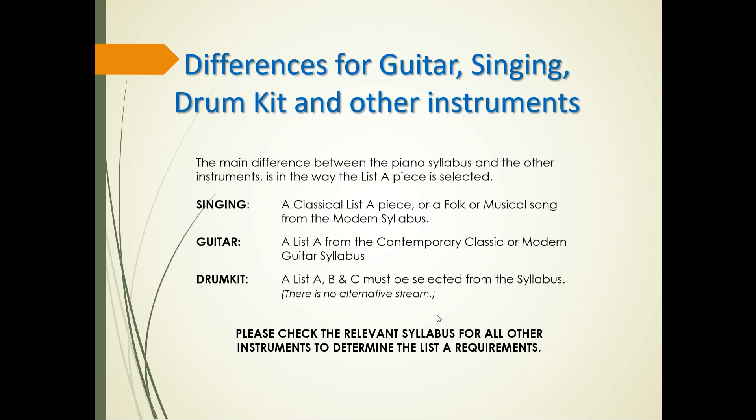The differences for guitar, singing, drum kit, and other instruments are not major. The main difference between the piano syllabus and other instruments is in the way the list A piece is selected. For singing, you can choose a list A piece or a folk or musical song from the modern syllabus. For guitar, a list A from the contemporary classic or the modern guitar syllabus. For drum kit, list A, B, and C must be selected from the syllabus — there is no modern and classical stream for drum kit, just drum kit. For other instruments, check the relevant syllabus for all other requirements.